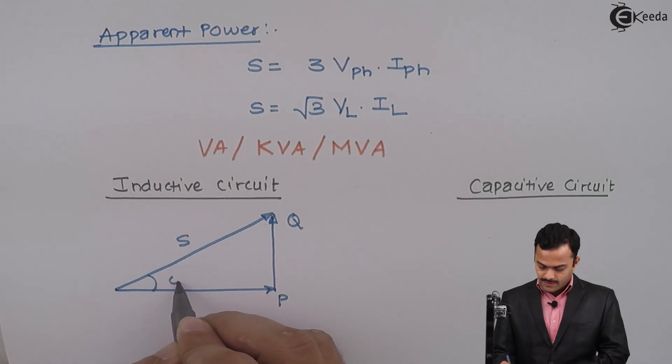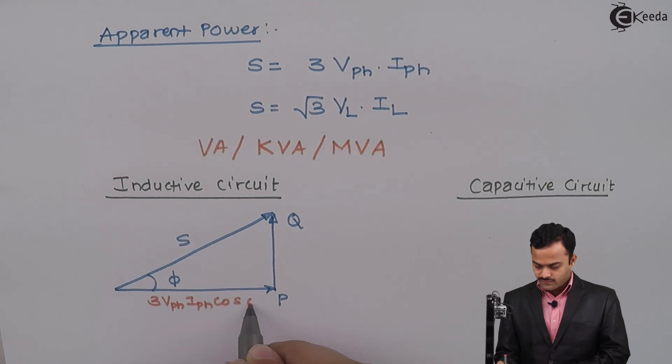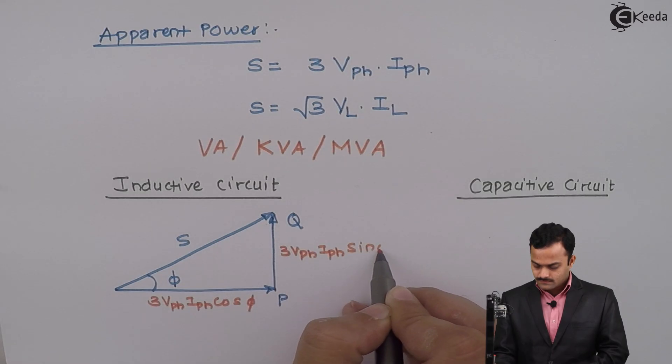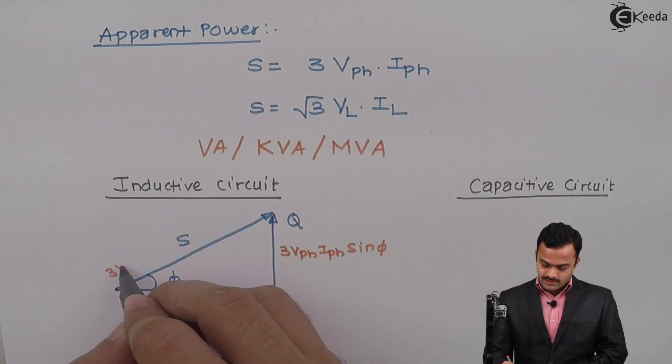this is Q and hypotenuse is S. Phase angle φ is the angle between S and P. Already we discussed this P is 3 VPH, IPH, cos φPH or cos φ you can say. Q is 3 VPH, IPH, sin φPH or sin φ and S is 3 VPH, IPH.